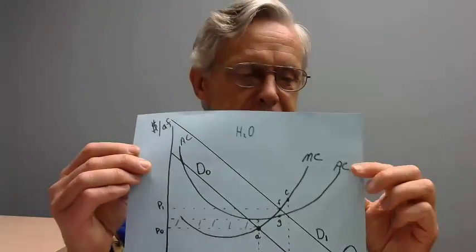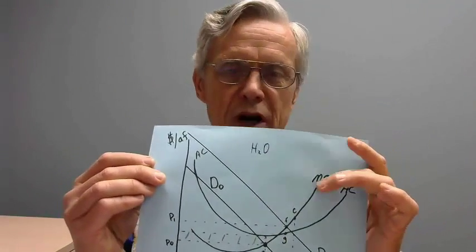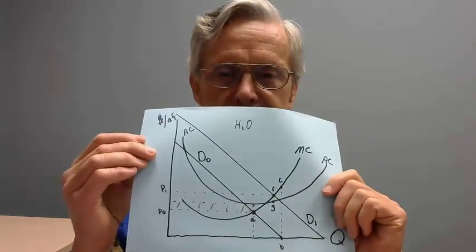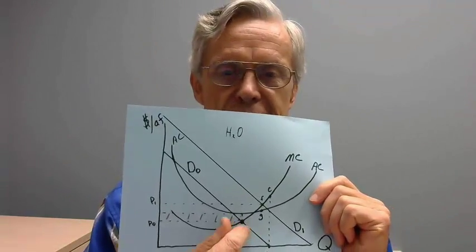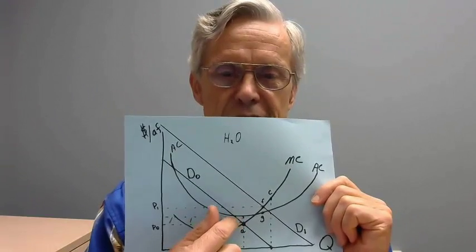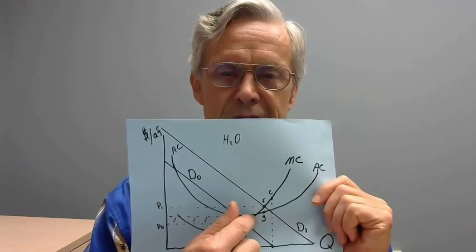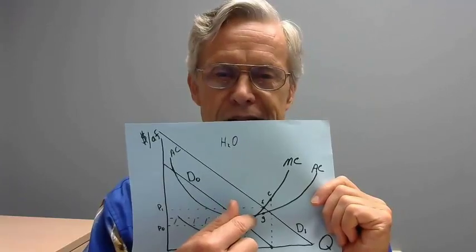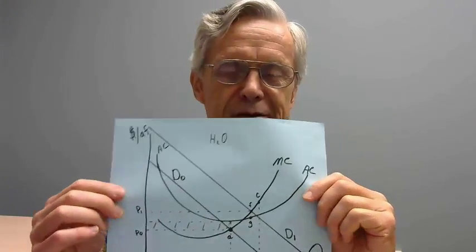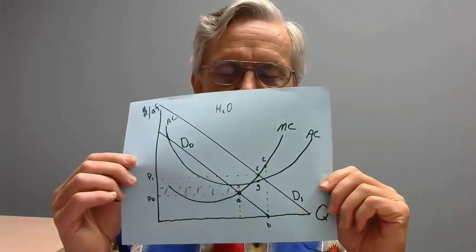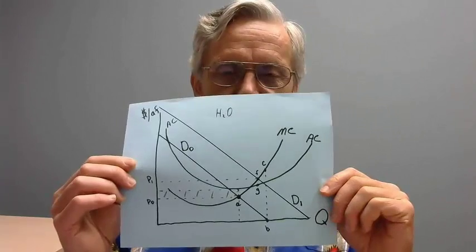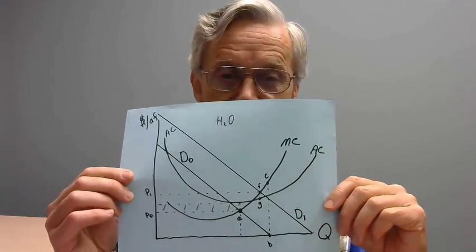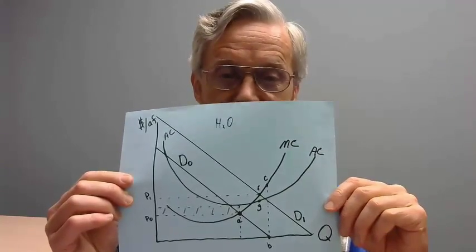On this graph there's the average cost and marginal cost, and the average cost always equals the marginal cost at the average cost minimum. Then we have two alternate demand lines — D0 and D1 — to talk about a couple of different possibilities and how, with growth, things can change and change big time.